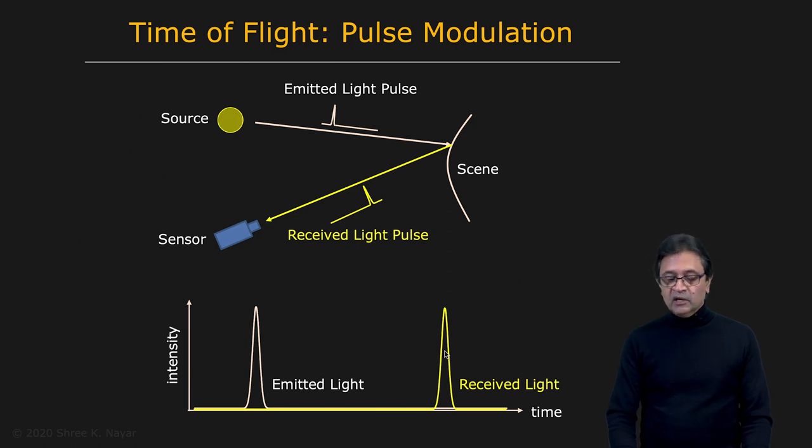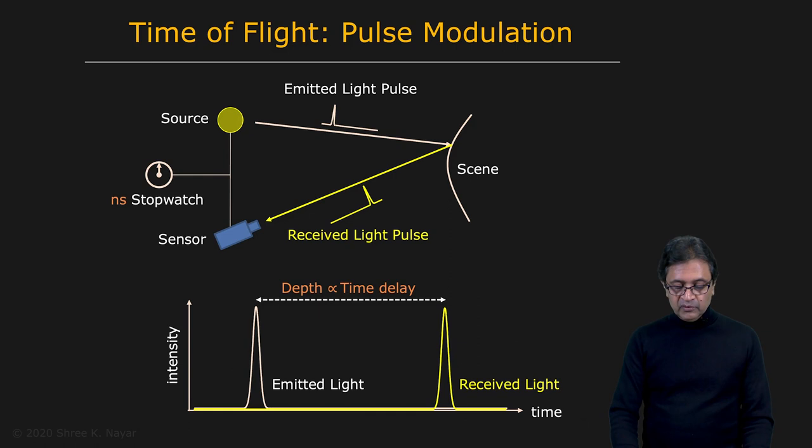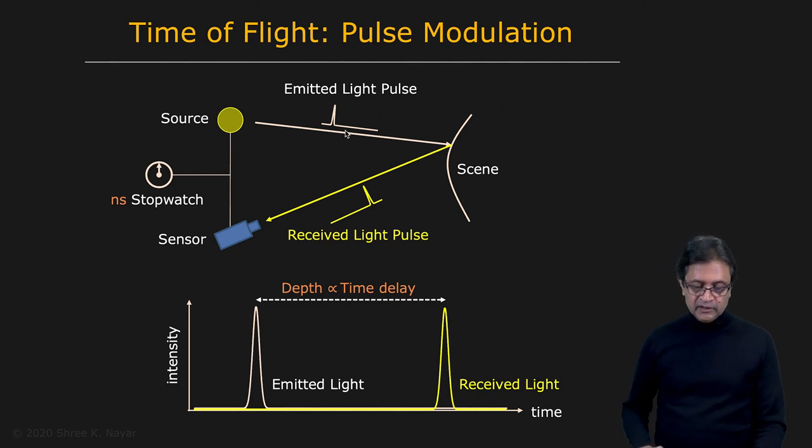If you can somehow measure the delay or time difference between the two pulses—the emitted pulse and the received pulse—then that time can be used to compute the distance that light has traveled using the speed of light. That's the basic idea.